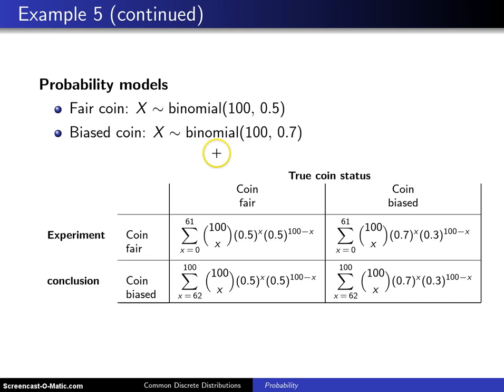Now, the way the experiment was run, the conclusion was that you had a biased coin if there were 62 or more heads that came up. So notice the conclusion that the coin is biased corresponds to 62 or more. So notice both of these summations run from 62 to 100, and those are the associated probabilities here.